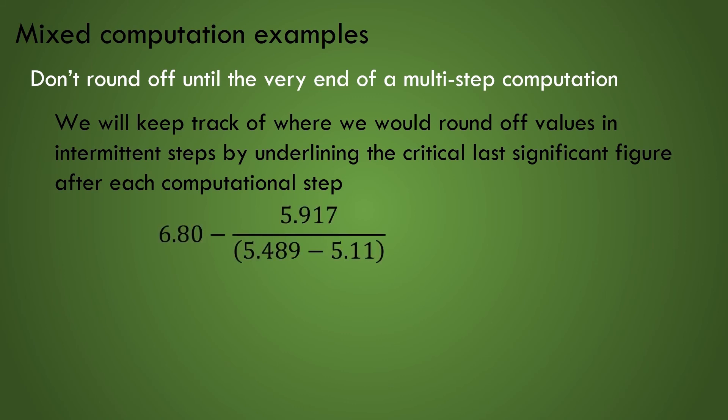Let's do an example of a mixed computation. First, we do the calculation within the parentheses obtaining .379, not rounding off but marking the significant digit of the computation, the number 7, because the least precise value in this computation was 5.11, and the final error of the particular computation should be in the hundredths place if we stopped at this computation.